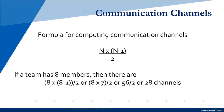Communication channels. We can calculate our communication channels. The formula is n times (n minus 1) divided by 2. If you had 8 members, then it works out as 8 times 7 divided by 2, which is 56 divided by 2, which is 28 channels. These channels represent the individual communication paths in your project.